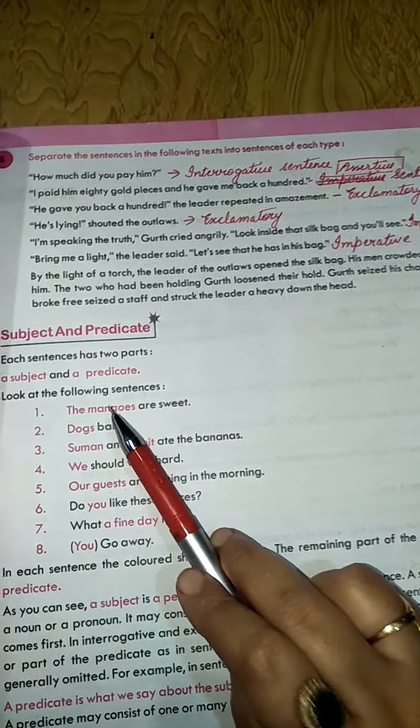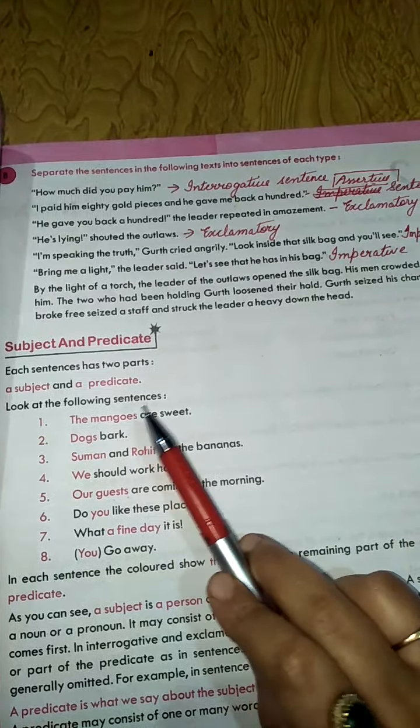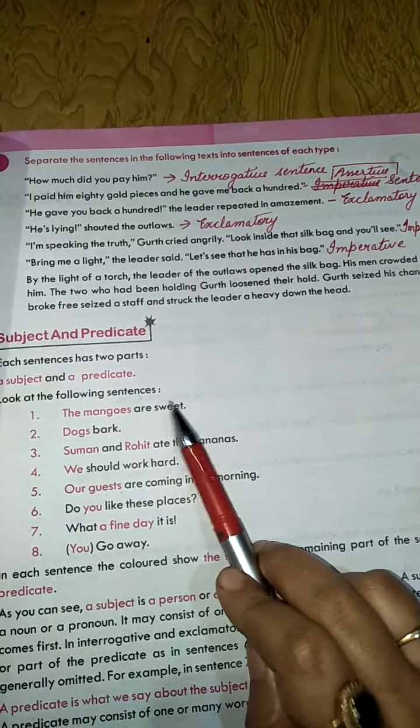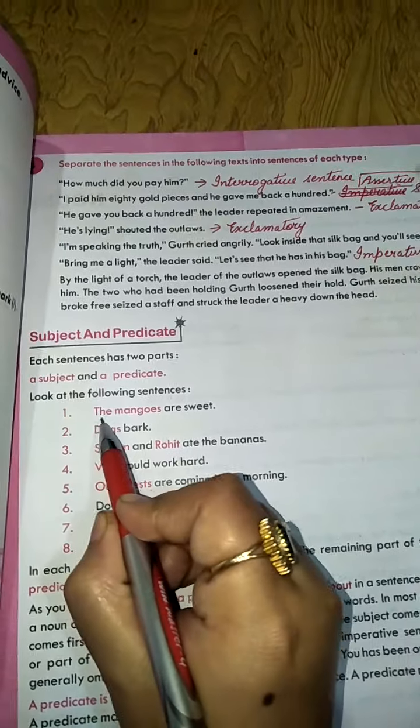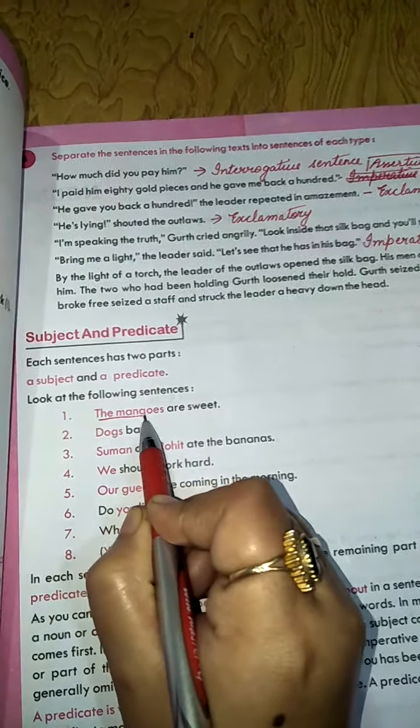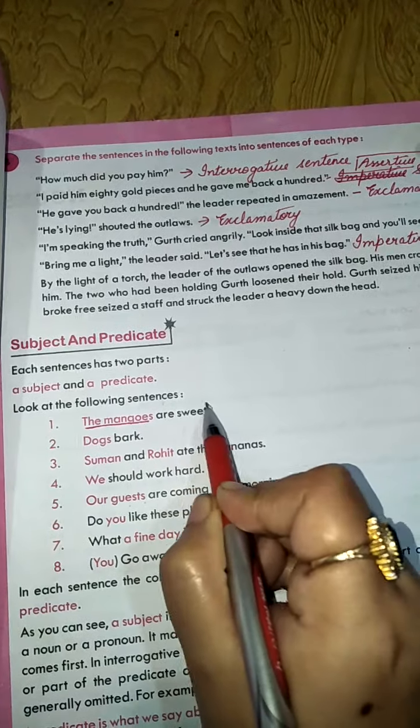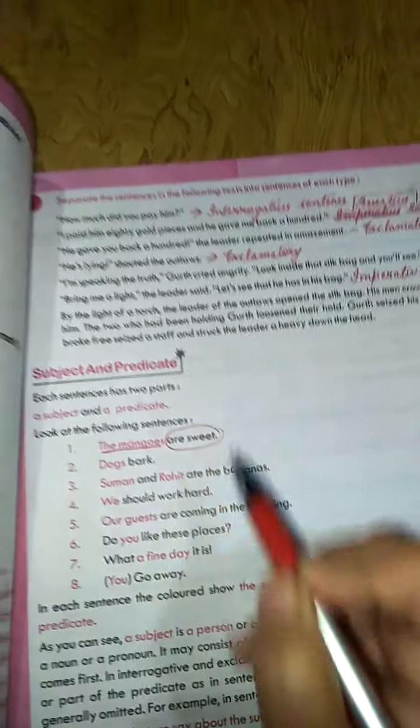So mangoes, what is the subject? Mangoes, about our sweet? So are sweet is what, is the predicate. So see, the mangoes, what is the subject, and are sweet, what is the predicate.